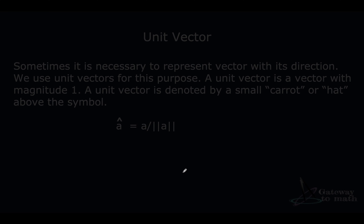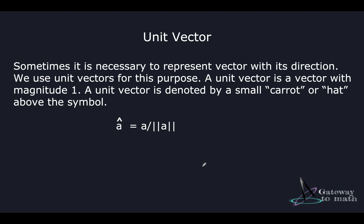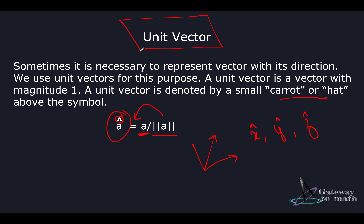Then comes the unit vector. Sometimes it is necessary to represent a vector with its direction only. To do that, we use unit vectors. A unit vector is a vector with magnitude of one, denoted by a small caret or hat above the symbol. You can take a vector and divide it by its magnitude to get the unit vector. The unit vector gives you the direction. If a vector is on the x-axis, we denote it as x-cap; if on the y-axis, y-cap — and its magnitude is one. This helps you figure out which direction the vector spans.